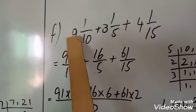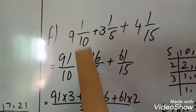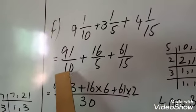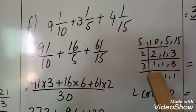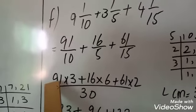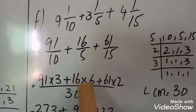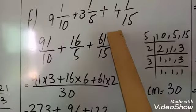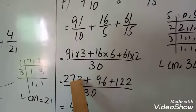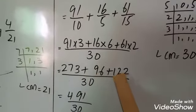Again we change into improper fractions: 10 times 9 is 90, plus 1 equals 91/10. 5 times 3 is 15, plus 1 equals 16/5. 5 times 15 is 60, plus 1 equals 61/15. Now we take LCM, which is 30. We write 30 — first value 10 times 3 is 30, so multiply 91 by 3. Plus 5 times 6 is 30, so multiply 16 by 6. Then 15 times 2 is 30, so multiply 61 by 2. So 91 times 3 is 273, plus 96, plus 122. We add these values to get the answer.